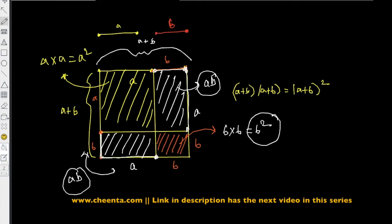So we have two rectangles whose areas are ab and ab, two squares whose areas are a² and b², and they together make up this big square. So we have (a+b)² is a² + ab + ab + b² which is precisely the identity that we had earlier.